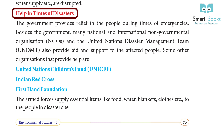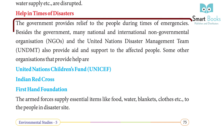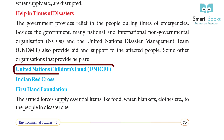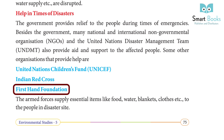Help in times of disasters: The government provides relief to people during times of emergencies. Besides the government, many national and international non-governmental organizations (NGOs) and the United Nations Disaster Management Team (UNDMT) also provide aid and support to the affected people. Some other organizations that provide help are the United Nations Children's Fund (UNICEF), Indian Red Cross, and First Hand Foundation.